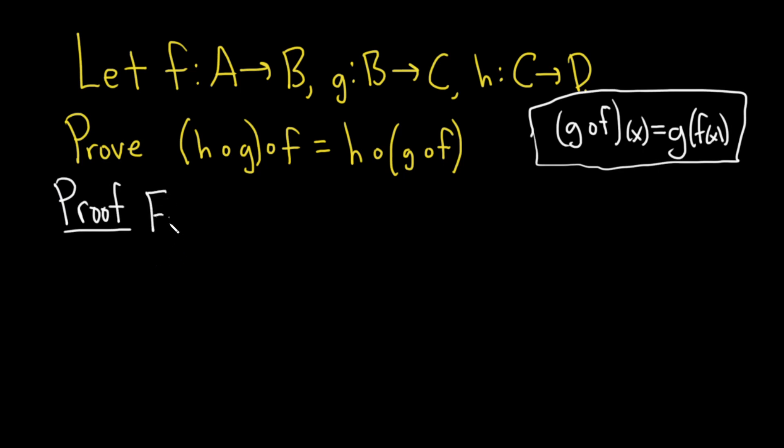So for every x in A, let's first look at this one here. So this would be (h∘g)∘f. And we're going to evaluate this function at x.